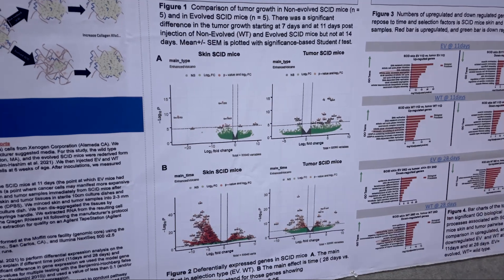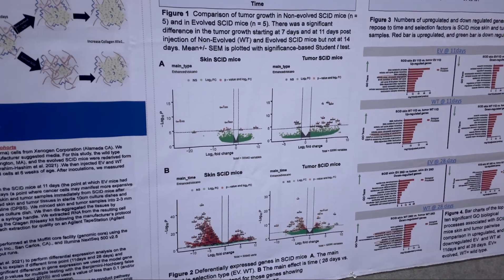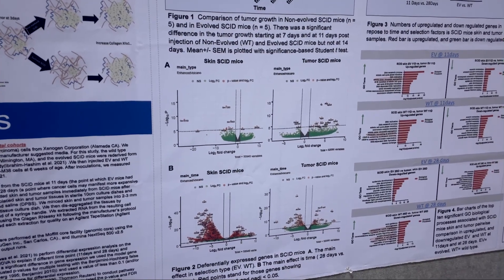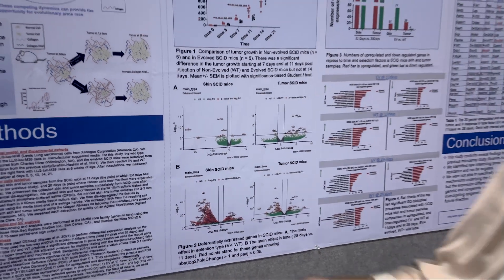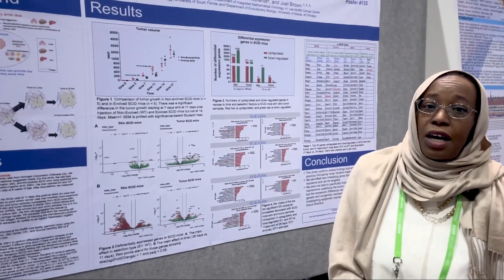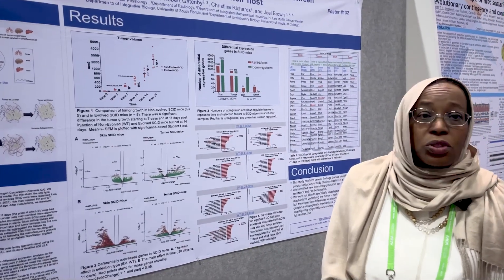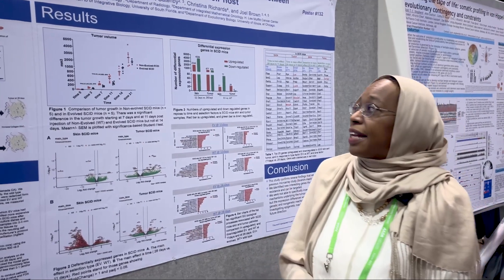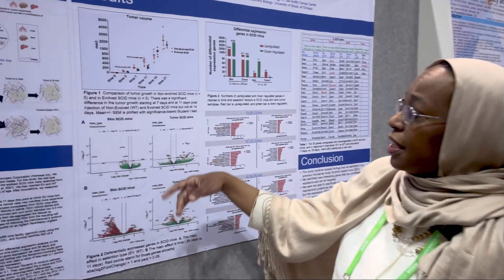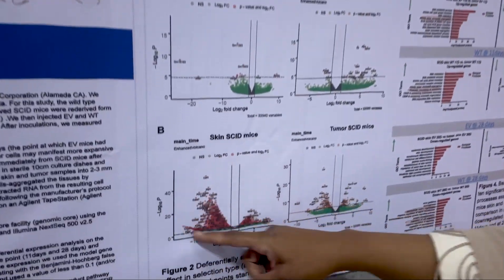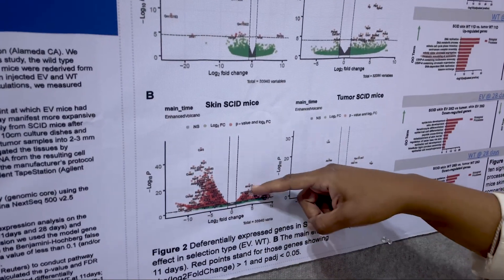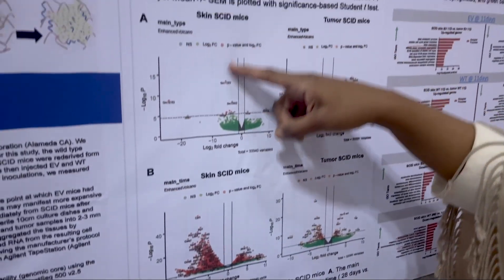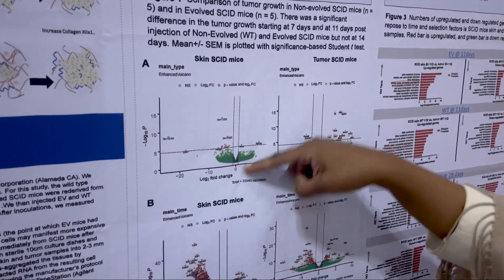This is done by RNA sequencing tools. I used RNA sequencing to sequence the tumor cells that grow in the mouse at different times, and I also sequenced the skin that the tumor is actually growing within. For my results, as you can see, the transcriptomic changes are associated with the type of selection.